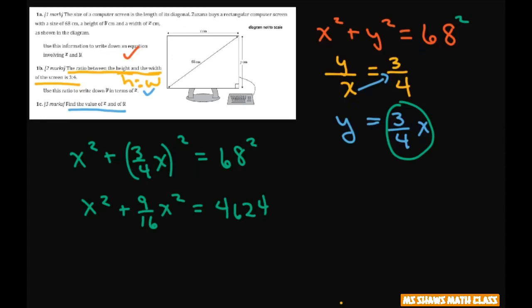I can write this 1. There's a 1 in front of here. So to add my x squares, I'm going to write this 16 divided by 16. So then when you add these up, you have the same denominator, which is 16. So that's 25 x squared equals 4,624.